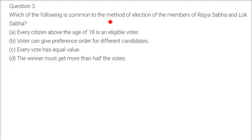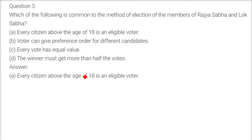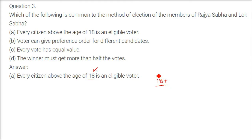Which of the following is common to the method of election of members of Rajya Sabha and Lok Sabha? The answer is that every citizen above the age of 18 is eligible to vote — that is, universal adult franchise, where the minimum voting age is 18 and above.